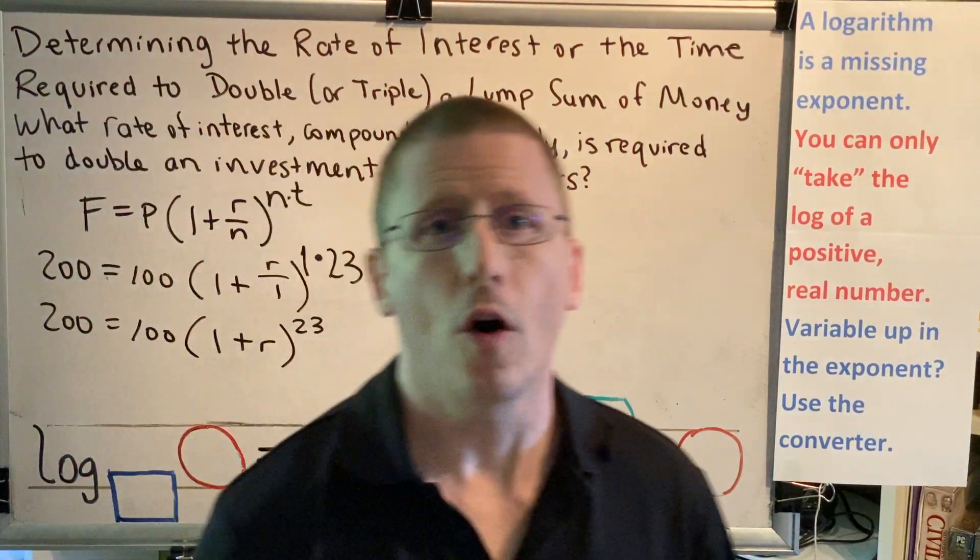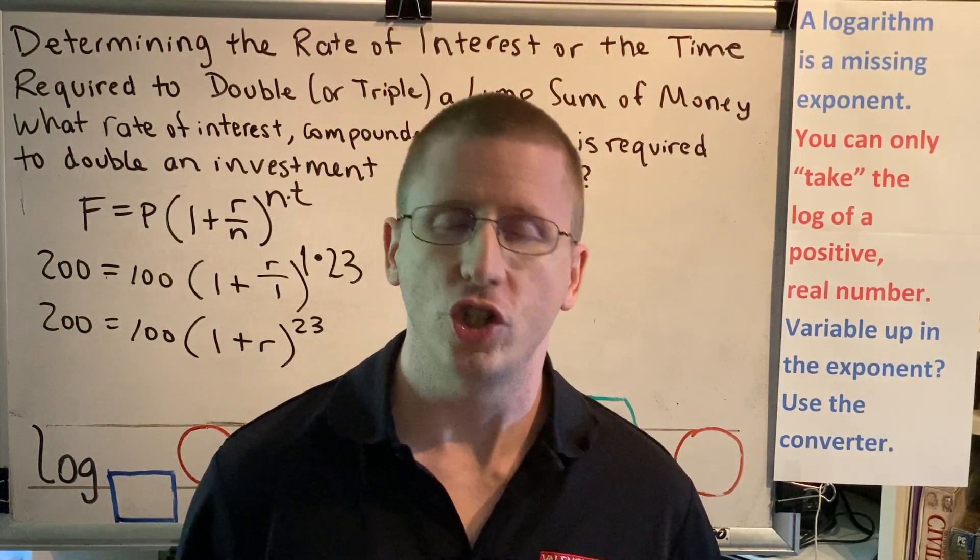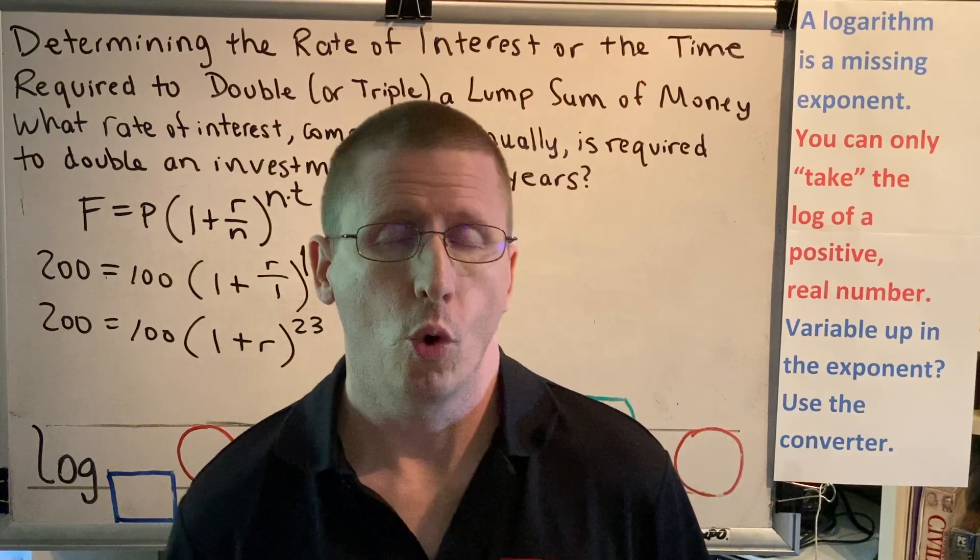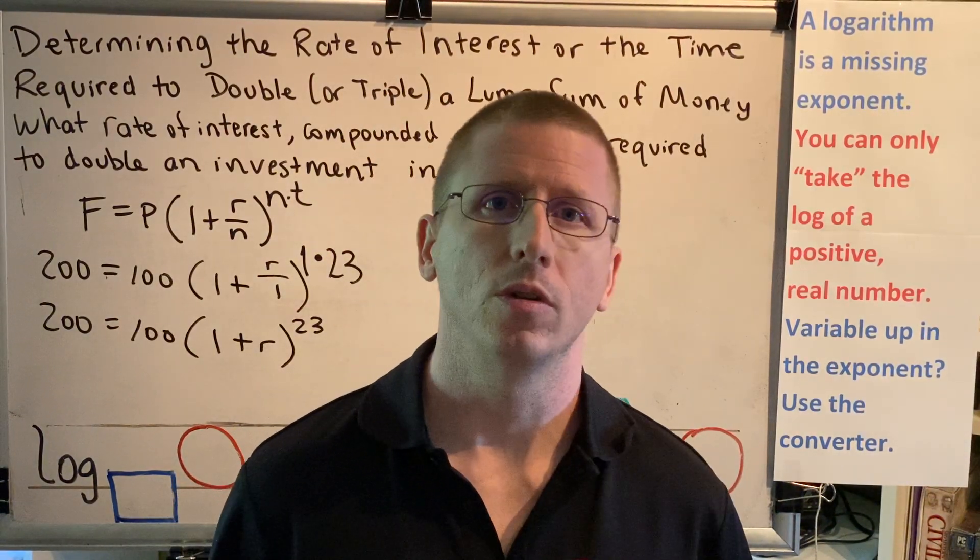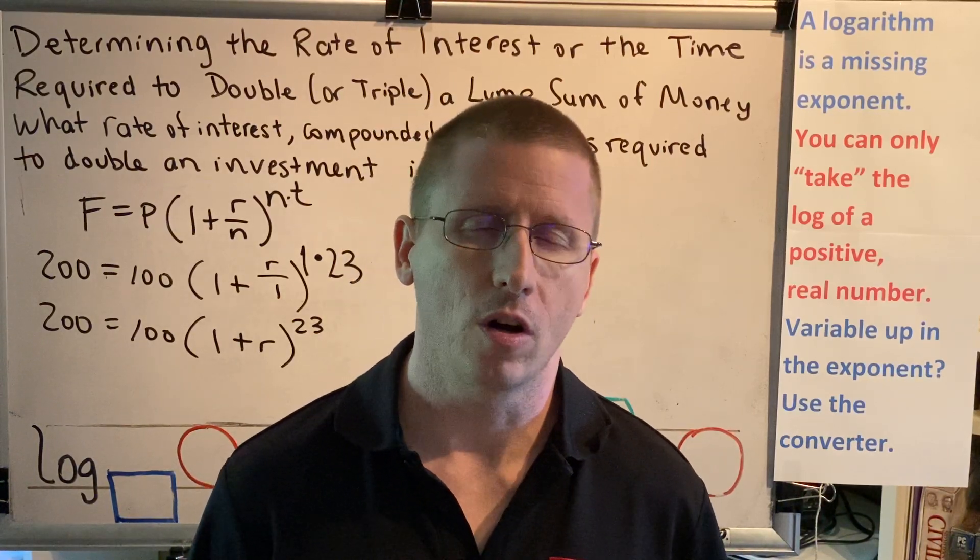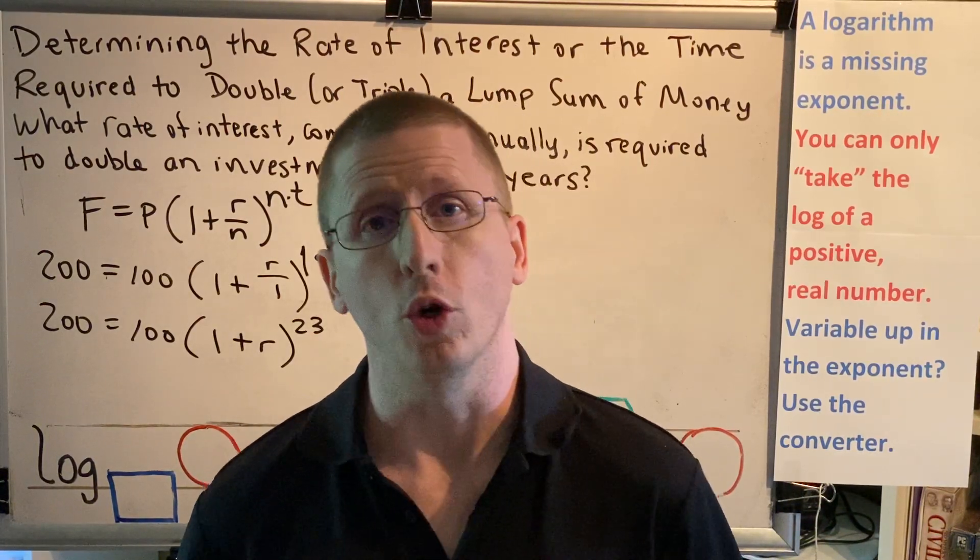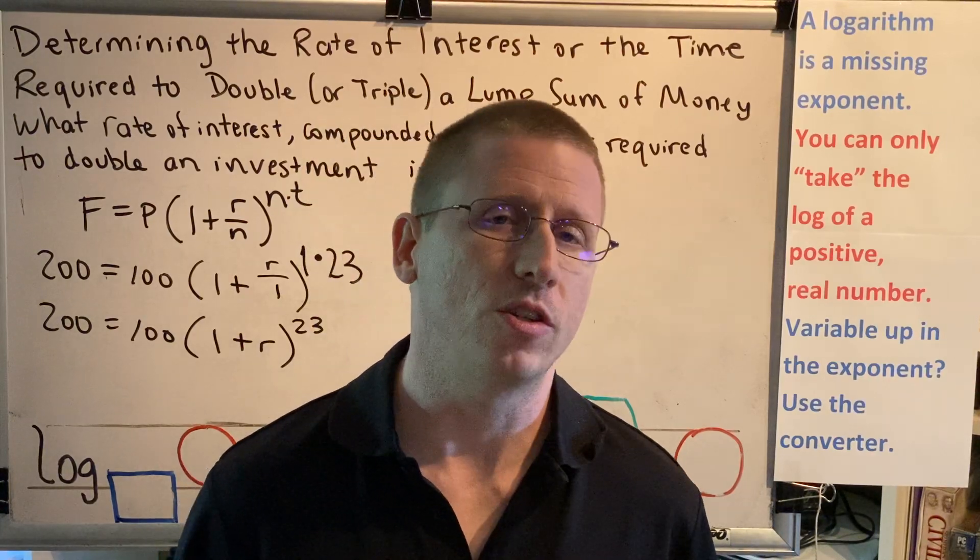Let's say you have R squared and you want it to just be R. What would you do? I hope your answer is square root. Square root turns R squared into just R. What if you had R cubed? How would you get that to be just an R?